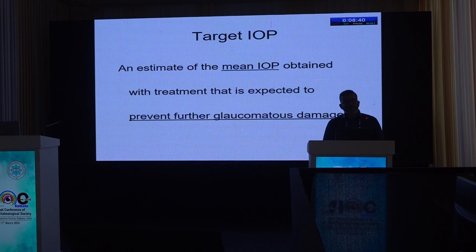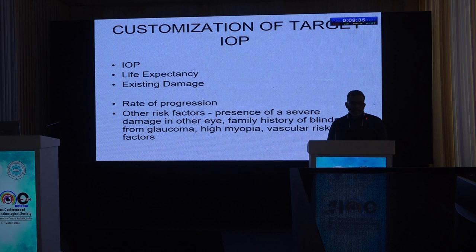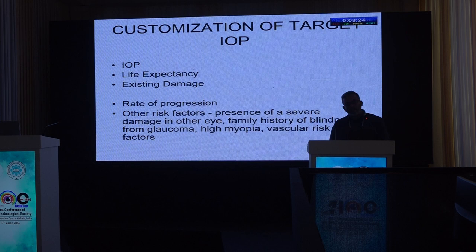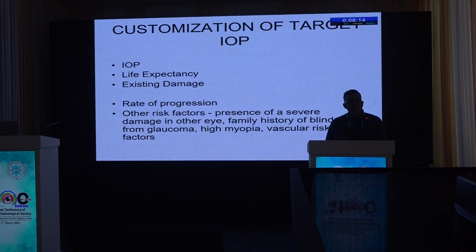Life expectancy matters: in a young patient, there are many more years for disease to progress, so a lower target IOP is needed. In an elderly patient above 78–80, a higher IOP may be acceptable. If pre-existing damage at diagnosis is very advanced, a further lower IOP is required. Other risk factors — one eye already lost to glaucoma, family history of blindness from glaucoma — also lead to a lower target IOP.